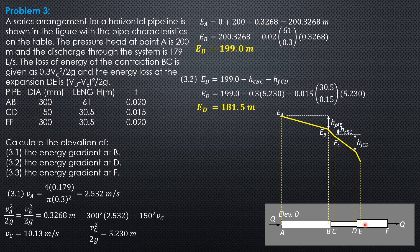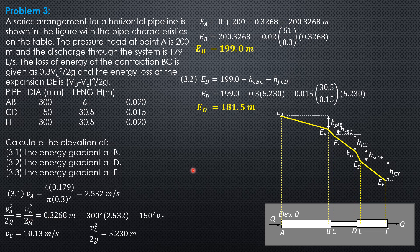From D to E, we have a sudden expansion. The head loss is given by (velocity at D minus velocity at E) squared over 2g. Between E and F, there is head loss due to pipe friction again. The pipe friction loss in EF is friction factor times length 30.5 divided by diameter 0.3, times velocity head at F, which is the same as at E = 0.3268 meters.